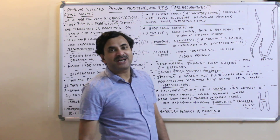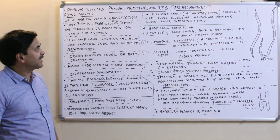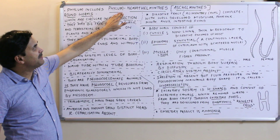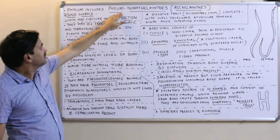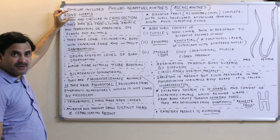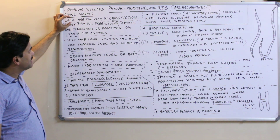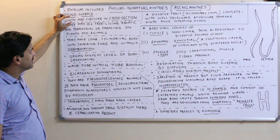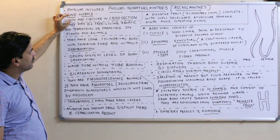Today we are discussing the Phylum Nematoda, also called Aschelminthes, which includes the round worms. They are called round worms because they are circular in cross-section.